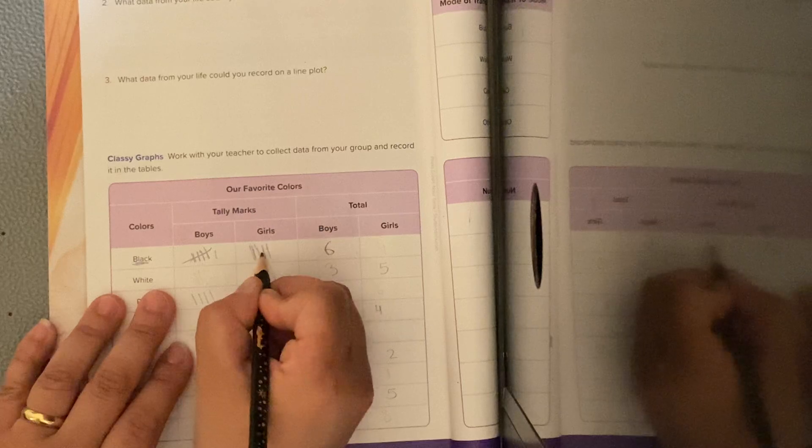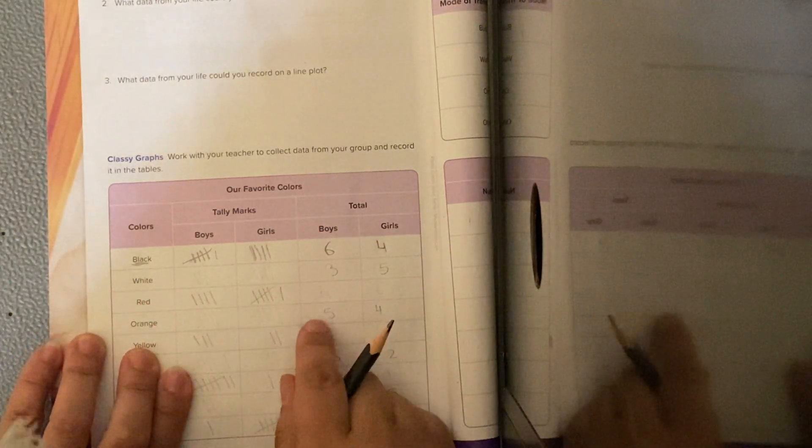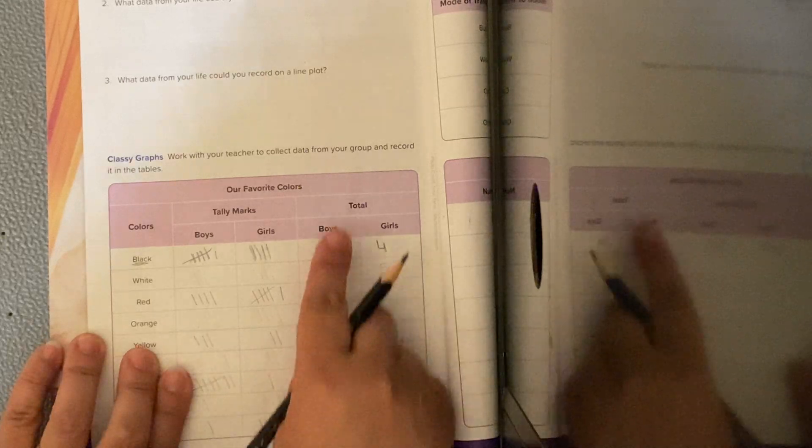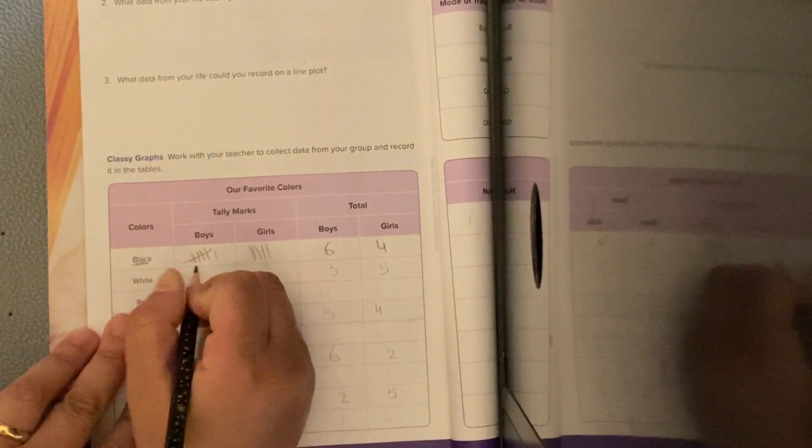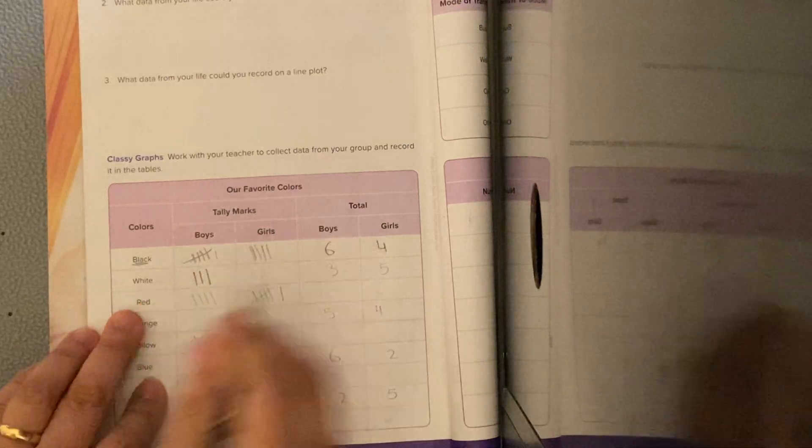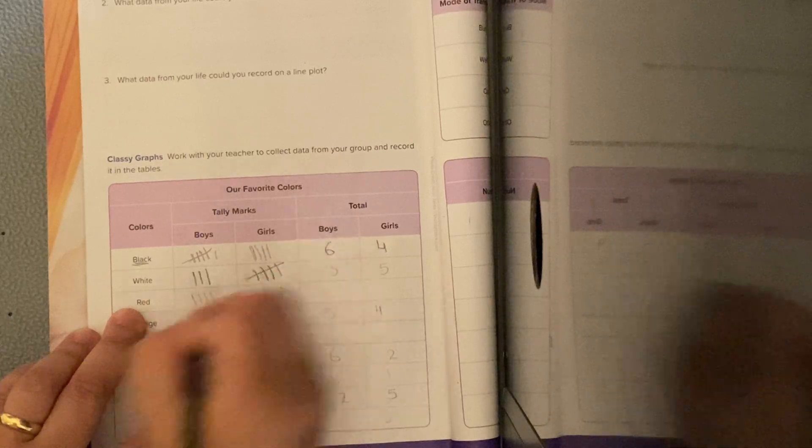How many for the girls? 1, 2, 3, 4. The second one here, I have how many for the boys like white? 3. So I am going to draw the tally: 1, 2, 3. How many for the girls? 5. 1, 2, 3, 4, 5.